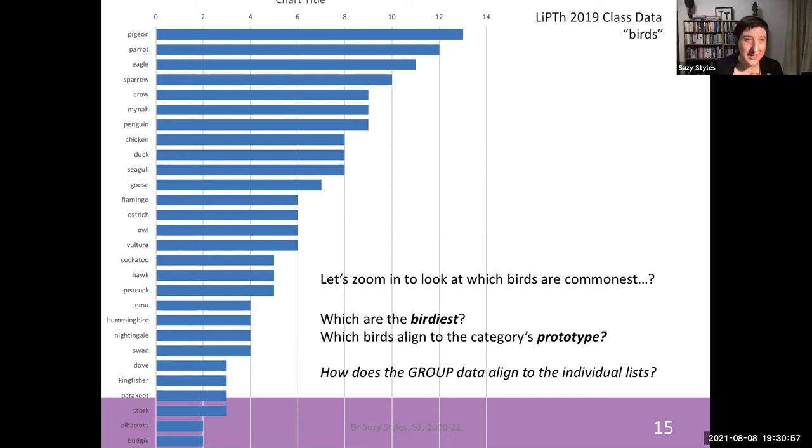After that we seem to get penguins, chickens, ducks, seagulls, goose, flamingo, ostrich, owl, vulture, cockatoo, hawk, peacock, emu, hummingbird, nightingale, swan, dove, etc. So when we look at this list we seem to have a ranking here that's telling us something about for Singaporean speakers, for speakers of the Singaporean variety of English, which birds are the birdiest? Which bird is the most prototypical bird when we think of the abstract category bird? What kind of features are we thinking of? And it seems to be that pigeons are it.